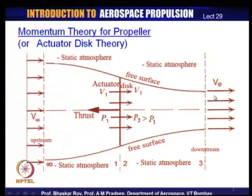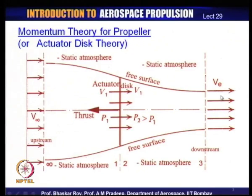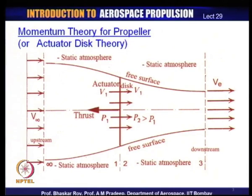V_e will have to be somewhat more than V_a or V∞, as per the thrust creation principle we have studied before in any form of jet propulsion. How much more depends on the propeller. The general concept is that the change in velocity across a propeller is normally somewhat small compared to any other kind of jet propulsion. This velocity would give us another estimate of the thrust, which should be close to the thrust determined by the jump in pressure across the actuator disc.